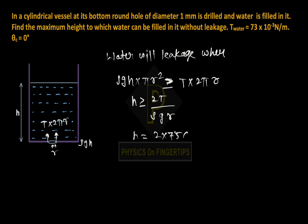So h equals 2 times 73×10⁻³ divided by 1000 into 10 into 0.5×10⁻³. Solving this, we get approximately 3 centimeters.